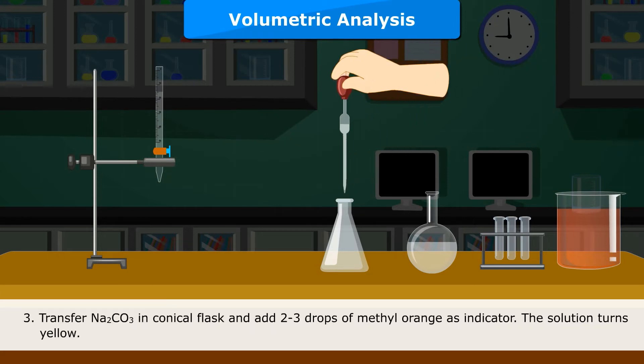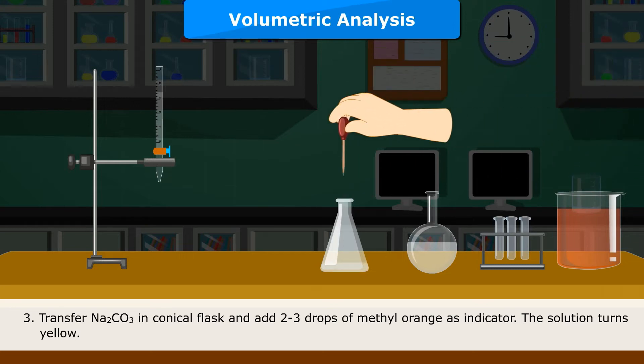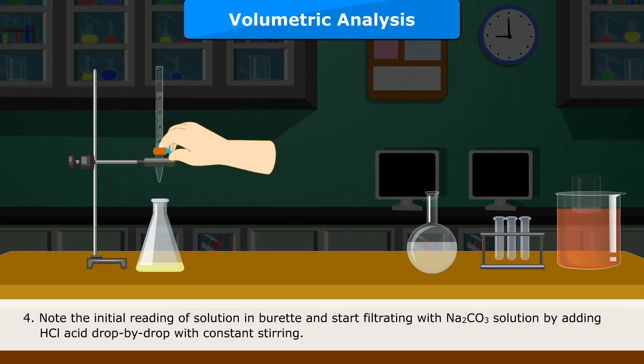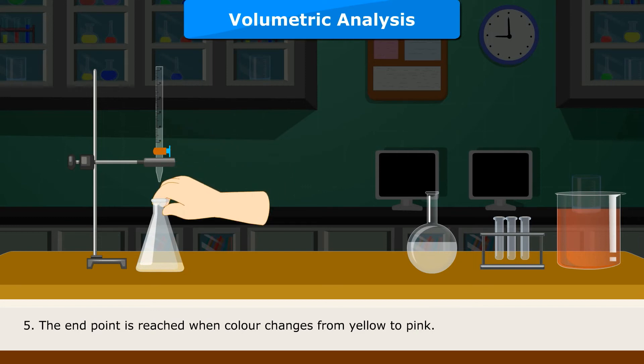Transfer Na2CO3 into conical flask and add 2 to 3 drops of methyl orange as indicator. The solution turns yellow. Note the initial reading of solution in burette and start titrating by adding HCl acid drop by drop with constant stirring. The endpoint is reached when color changes from yellow to pink.